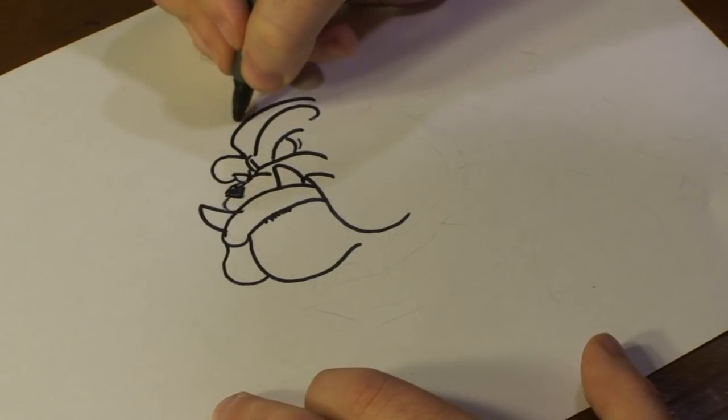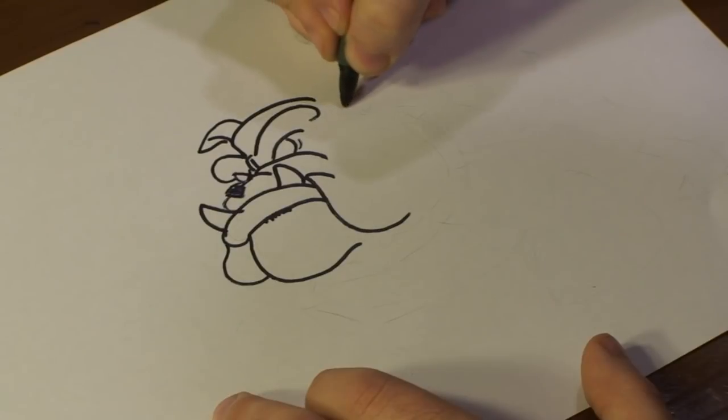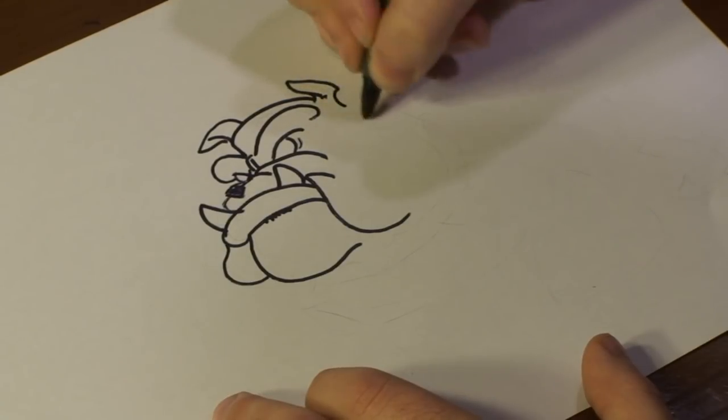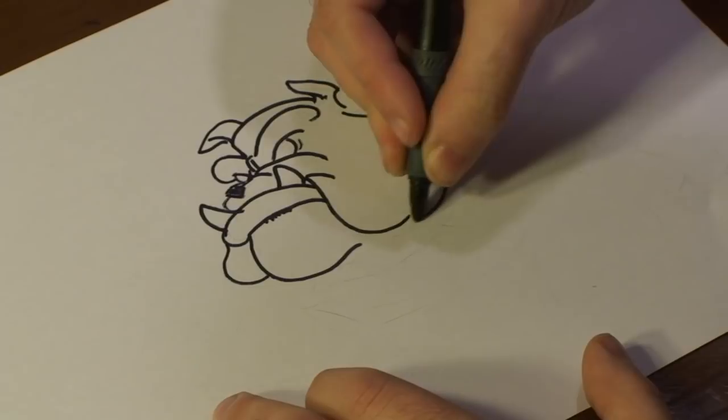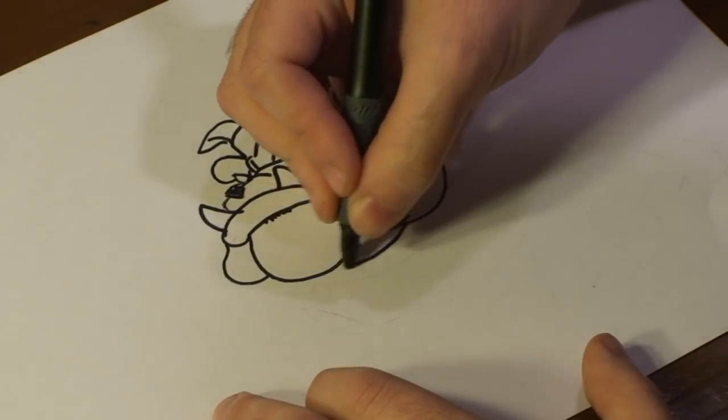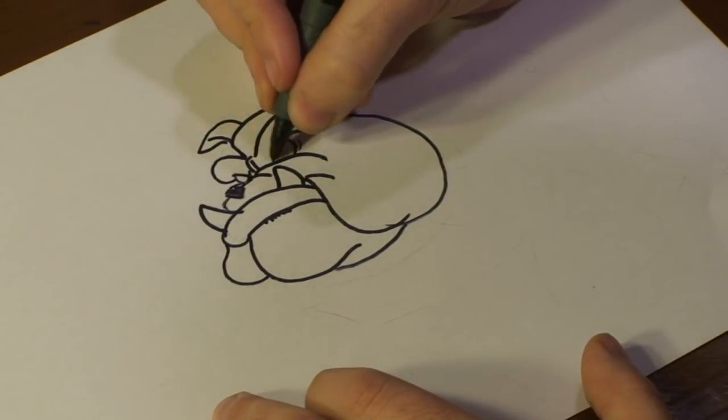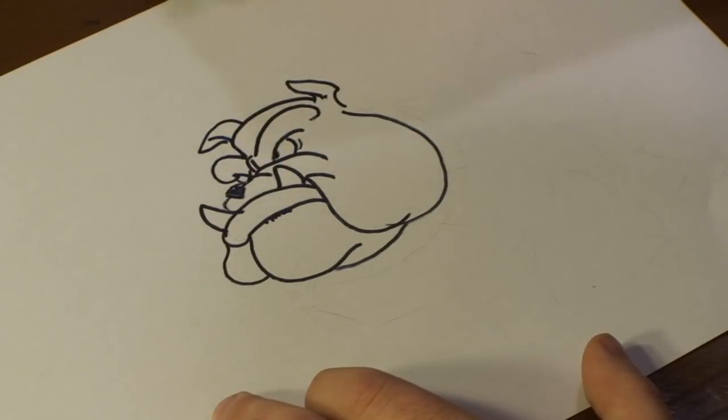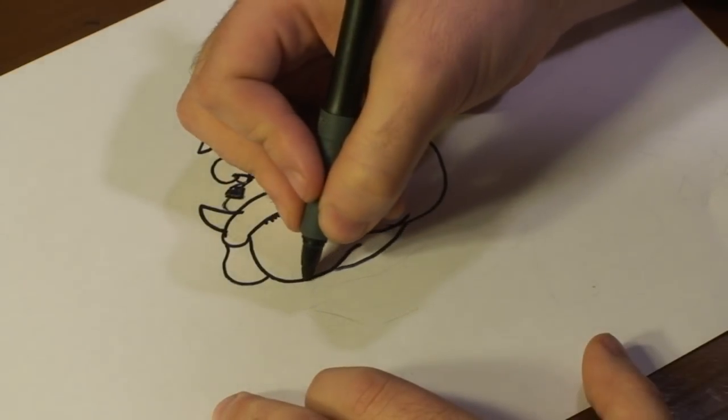That'll be his head. And then we need to start drawing out an ear. Looking pretty serious. Now we just need to draw out a collar.